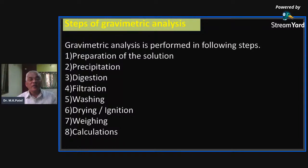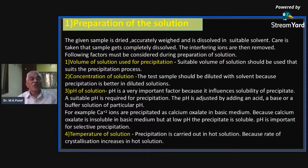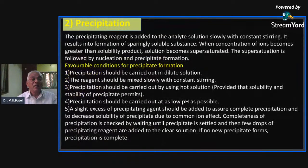We saw different concepts regarding solubility and precipitation, then came to the actual process of gravimetric analysis, which is performed in the following steps: preparation of solution, precipitation, digestion, filtration, washing, drying, weighing, and finally calculation. Regarding solution preparation, concentration and pH of the solution affect the total solution, and temperature should also be maintained.